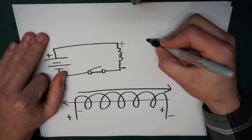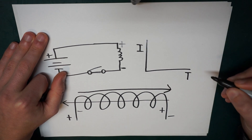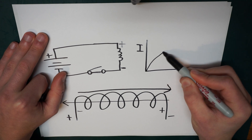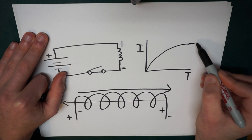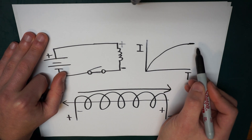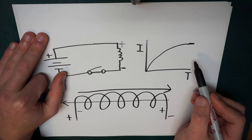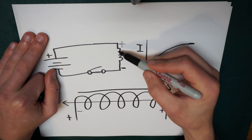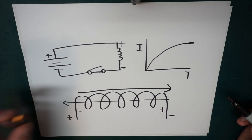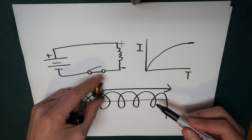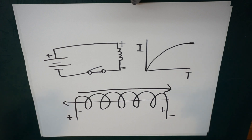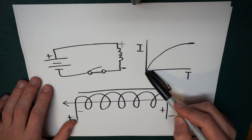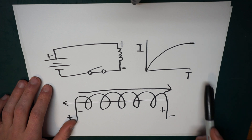If we graph current (i) versus time (t): initially the current is zero. Over time, current begins to flow through the inductor, increasing exponentially, and after a given amount of time it tapers off at its maximum current level — determined by Ohm's law. At that point, this inductor essentially acts just like a wire.